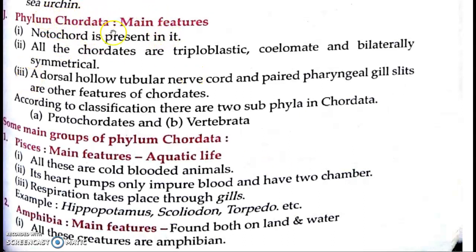Aaj hum Chordata ke features padhenge. Is se pehle humne padhe the: Porifera, Coelenterata, Annelida, Mollusca, Echinodermata, Platyhelminthes, Aschelminthes — un sab ke baare mein humne padha tha. Aaj hum padhenge Chordata ke baare mein. Toh basically Chordata kya hota hai?